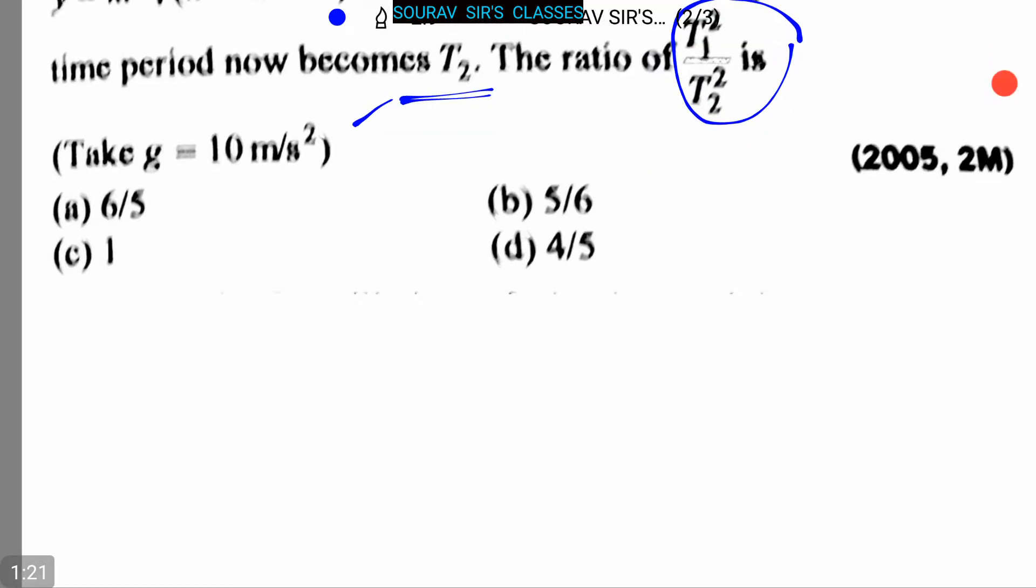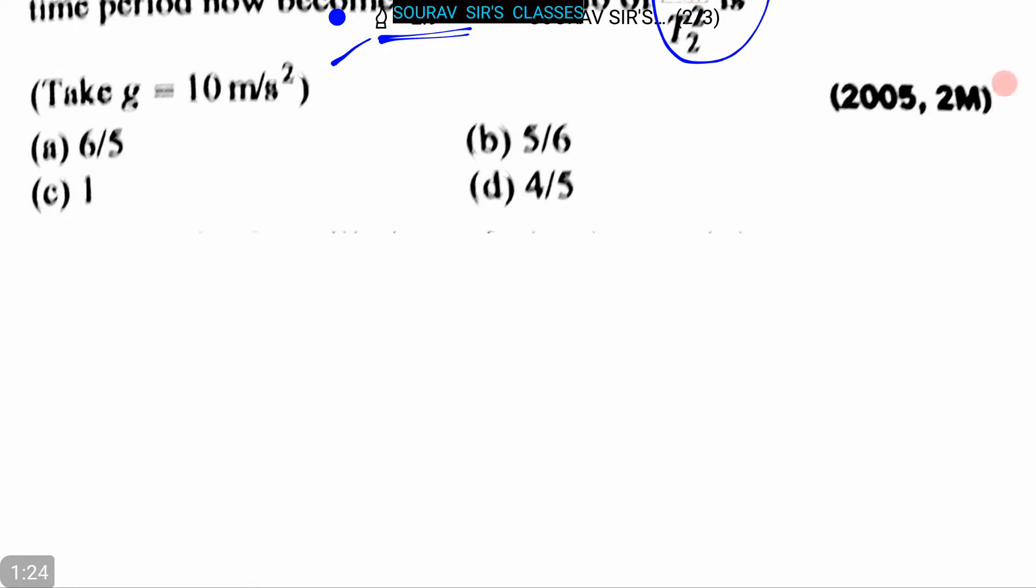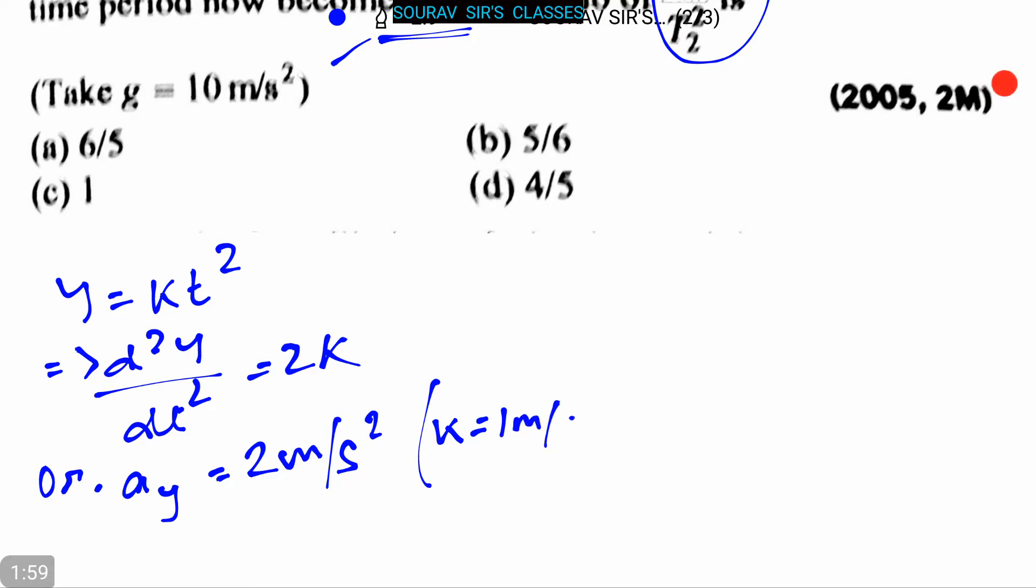So now let's start. y = kt². From this we can write d²y/dt² = 2k. We are just simply doing derivation here. Or we can also write that aᵧ = 2 m/s², as k = 1 m/s².